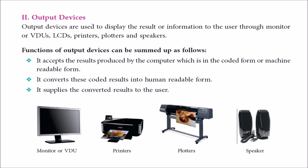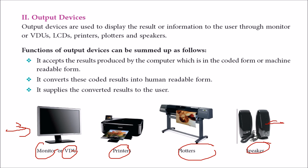Output devices give the user an output. These include a VDU (visual display unit), a monitor, a printer, a plotter, or a speaker which gives output as sound. The function of output devices is to accept the results produced by the computer in coded/machine-readable form, convert these results into human-readable, human-understandable form, and supply the converted result to the user.